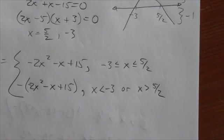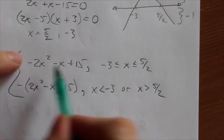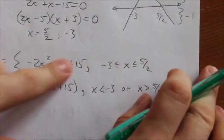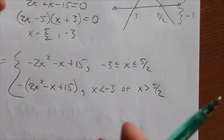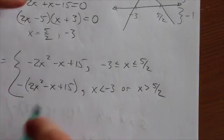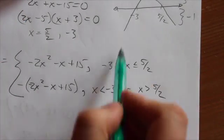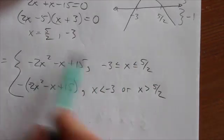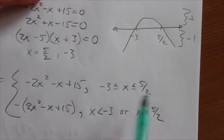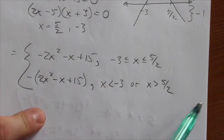So we saw in a previous example that if the function opens up, then the positive one goes with the outside. It goes outside the roots. And then in between the roots is when the absolute value changes it. But here, because this function opens down, then my positive part here will be between the two roots and my negative part will be outside.